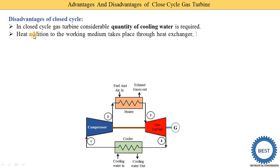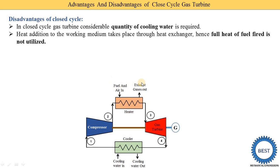The second disadvantage is that heat addition to the working medium takes place through a heat exchanger. Hence, the full heat of the fuel fired is not utilized. Since the working fluid passes inside the tubes and the fuel combustion occurs outside — this indirect heating means not all the heat energy produced by burning the fuel is transferred to the working fluid.